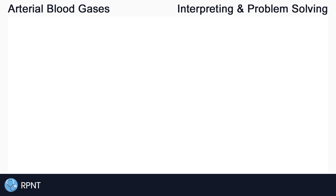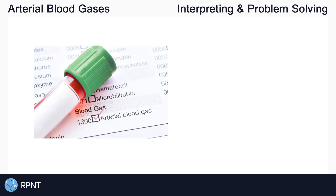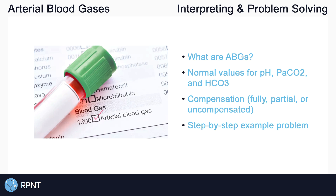Hi everyone, this is Ryan from rpnt.ca and today we're going to be learning how to interpret arterial blood gases or ABGs. This topic is one that a lot of my students tend to struggle with, so I'll try to simplify things and make it easy for you to solve ABG problems. We'll go over what ABGs are, the normal ranges of pH, PaCO2, and HCO3, the different types of compensation, and finally the steps to solve an ABG problem using a practice question. If you want to jump directly to how to solve an ABG problem, you can use the timestamps in the video description.